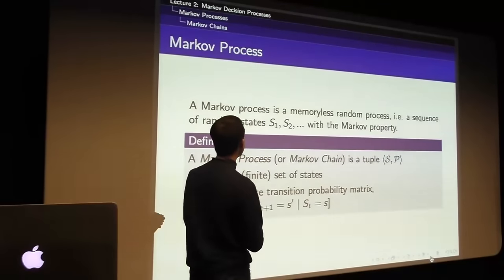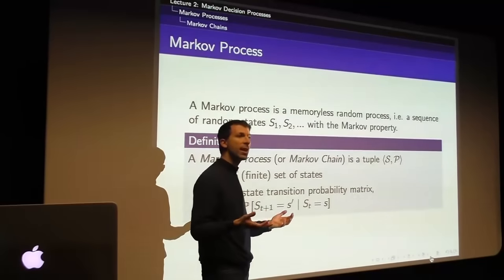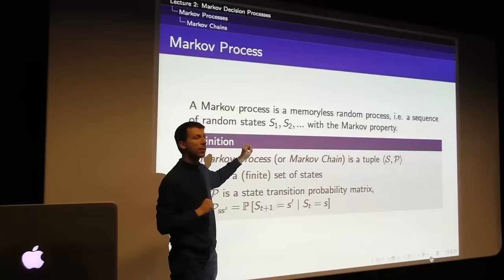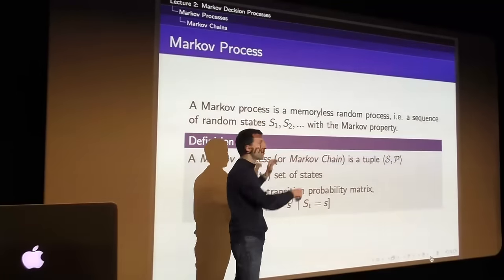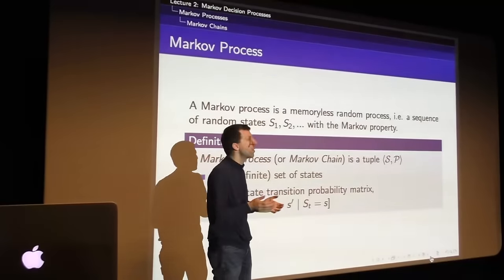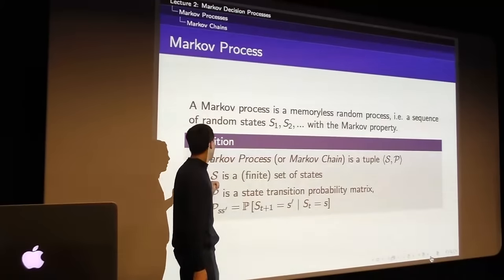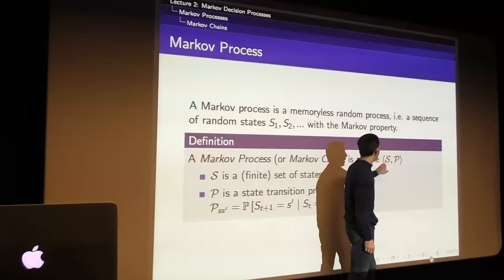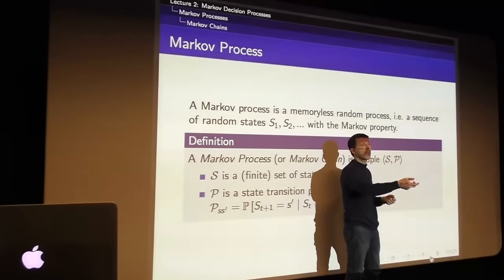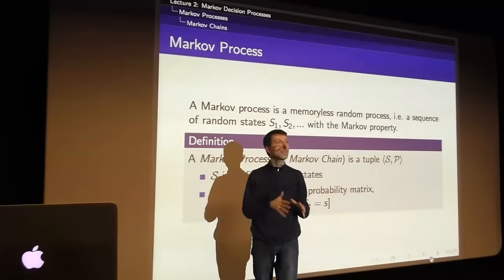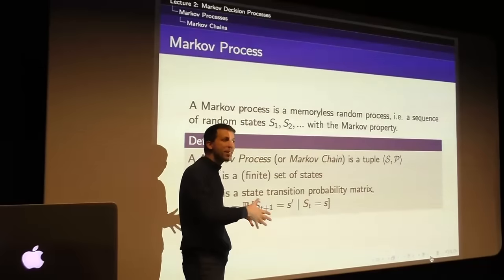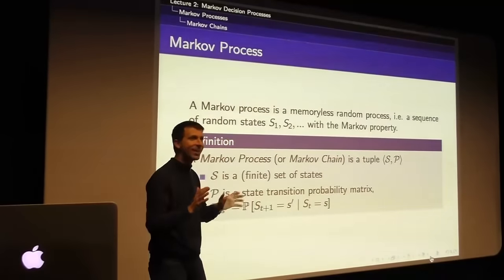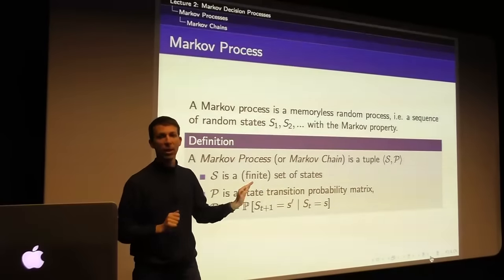Formally, a Markov process is a random process — a sequence of random states S1, S2 going on in time — that has the Markov property. All it requires to define it is a state space S and transition probabilities P that characterize how we move from one state to the next. This fully defines the dynamics of the whole system: the evolution of our robot, trading agent, or chess-playing agent. No actions yet, no rewards yet, but the dynamics are fully defined.